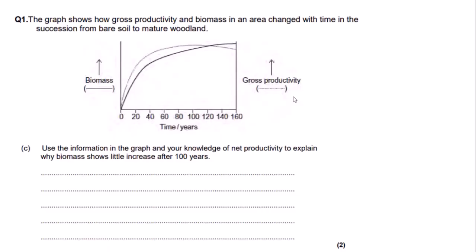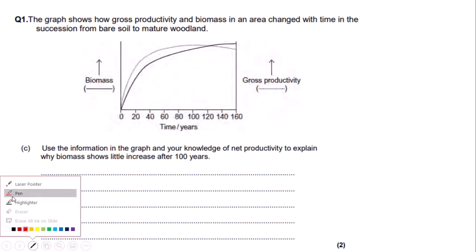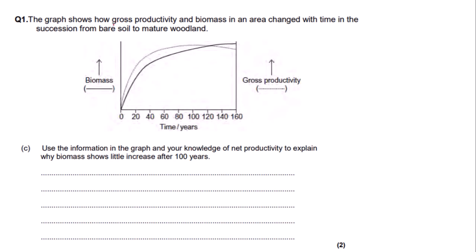This question here is a really good example of the importance of reading the question properly. The graph shows how gross productivity and biomass in an area changed with time in a succession from bare soil to mature woodland. I'll underline 'gross' and note 'bare soil to mature woodland' — this will become important. The question says: use the information in the graph and your knowledge of net productivity to explain why biomass shows little increase after 100 years.